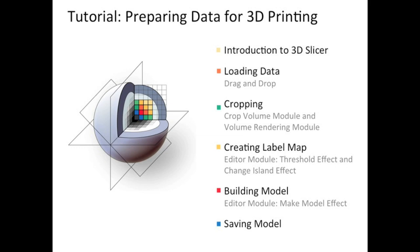Now we've loaded our data into Slicer and we're able to window level, zoom in, zoom out, and pan it around as we need to. So we can go ahead and start cropping that cone beam CT down to the region I'm specifically interested in. In order to do that, I'm going to use the crop volume module of Slicer, but I'm going to inform it with the volume rendering module, so that I can create a 3D volume rendering of my cone beam CT and then select the region I'm interested in using that rendering as a guide. So I'll begin by loading that volume rendering module first.